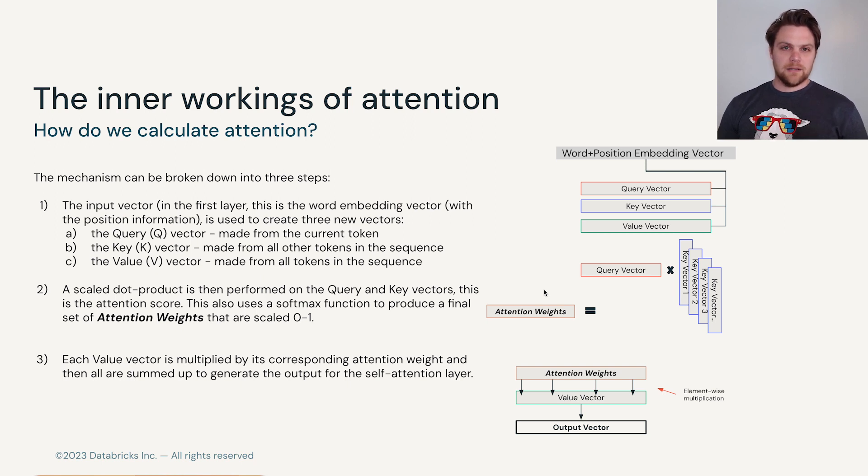The query vector, as I said before, is just built from the current token. We then multiply that using a scaled dot product on the query vector to all of the key vectors. And what this gives us is attention scores. We're going to have an attention score for each pair of the current query vector to each of the key vectors.